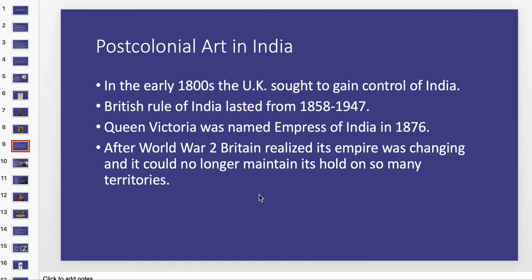Next we'll look at post-colonial art from India. In the early 1800s the UK sought to gain control of India, and British rule of India lasted from 1858 to 1947 — quite recently in the scheme of things. Part of maintaining this control was that Queen Victoria named herself Empress of India in 1876. She wanted to be not just Queen but Empress, reaching out and grabbing more territory through this.